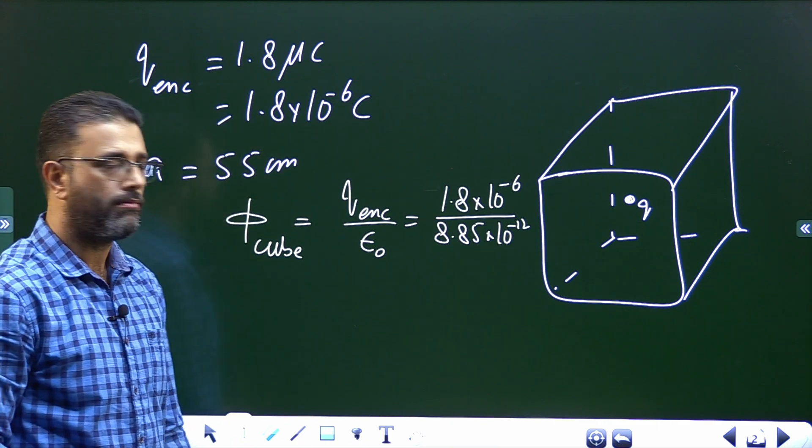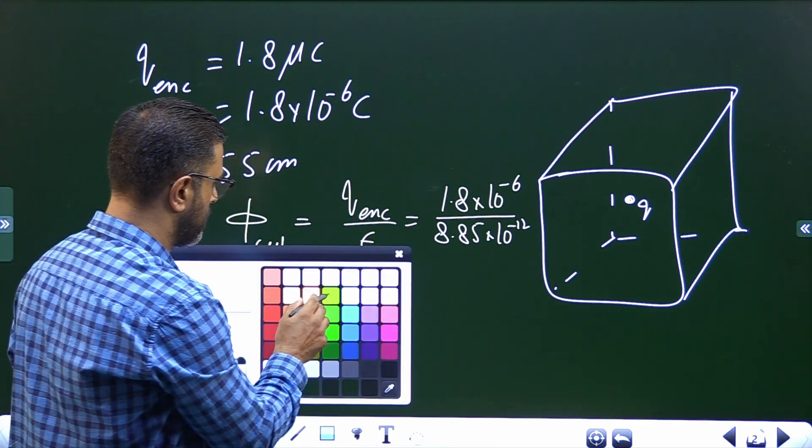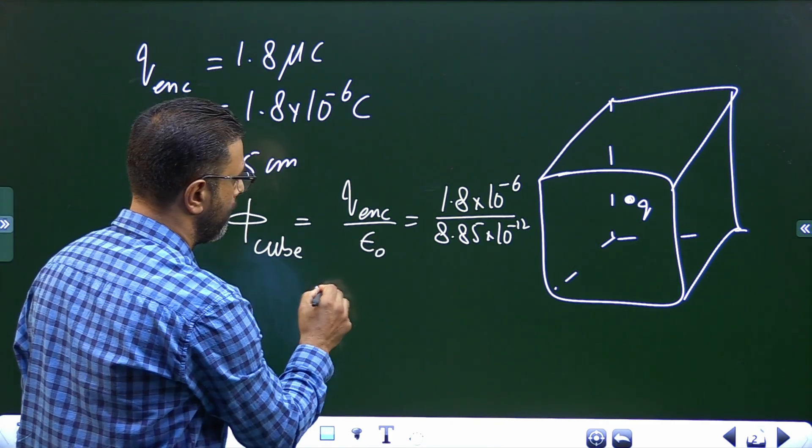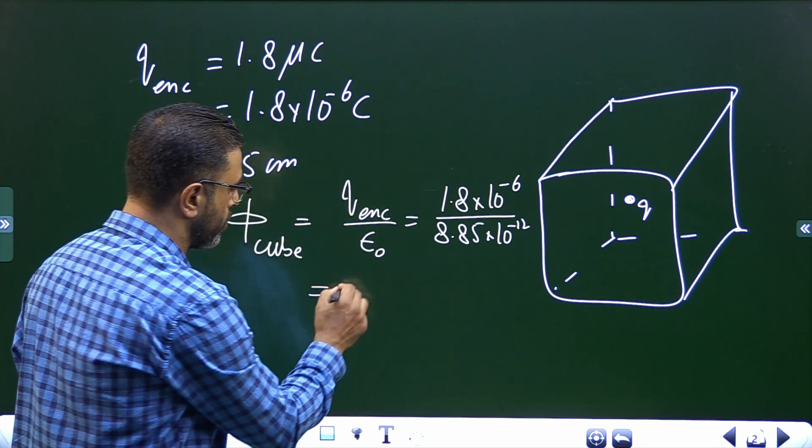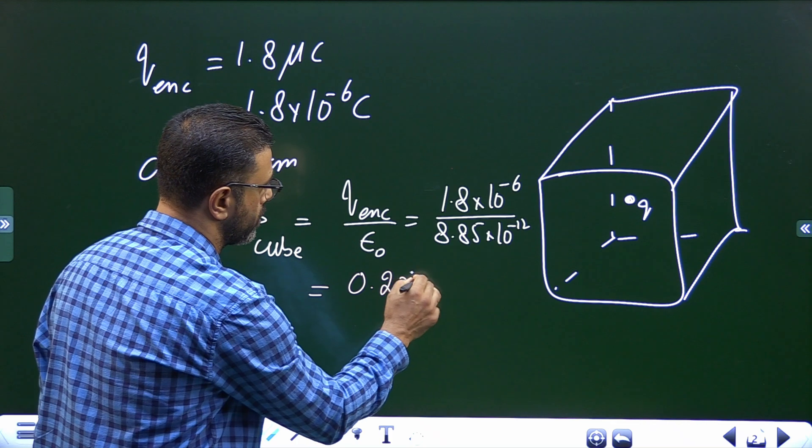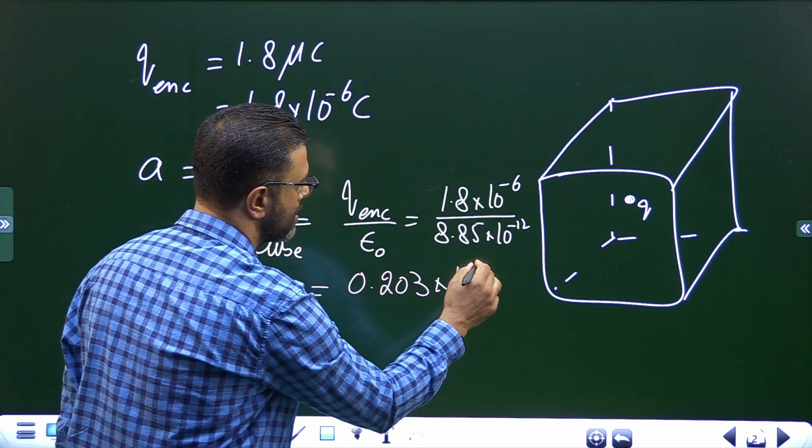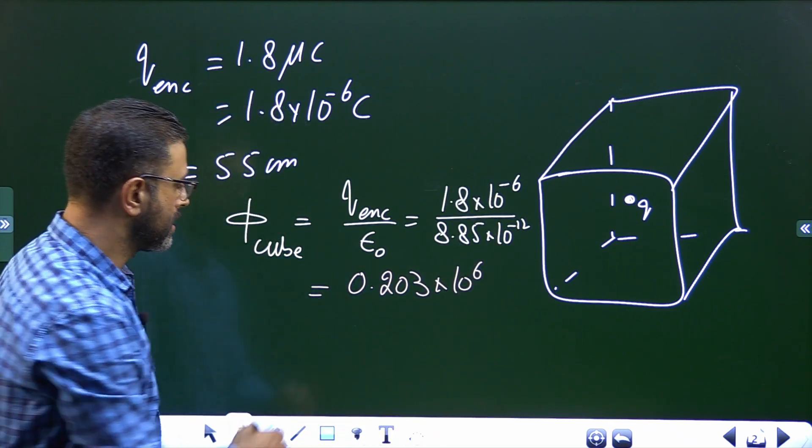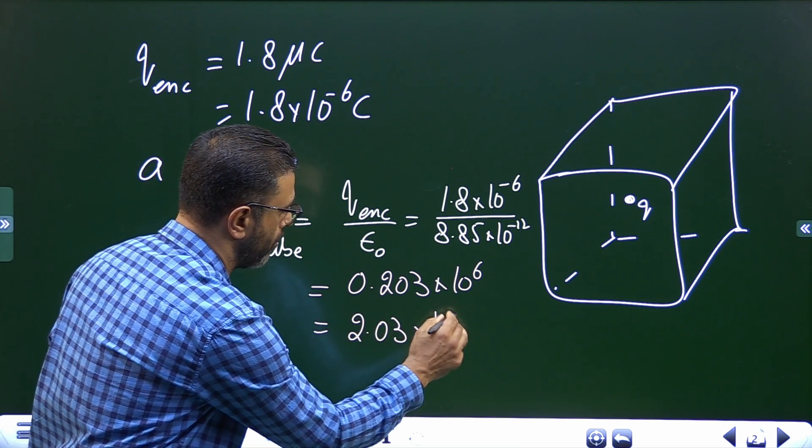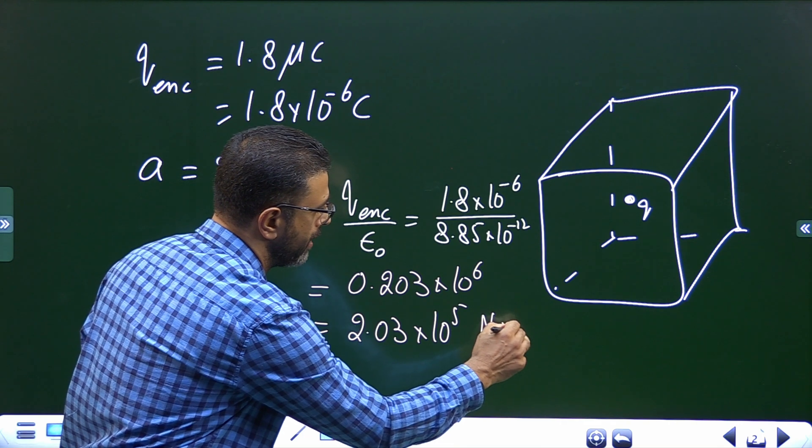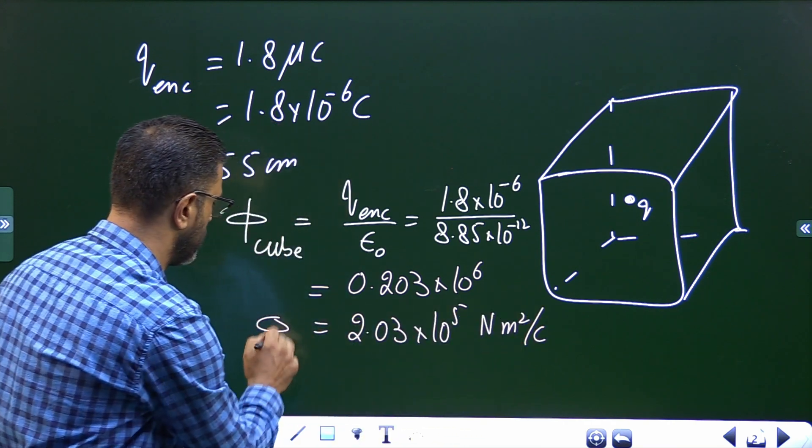So now this thing is, I already worked it out, 0.203 into 10 to the power 6, which is 2.03 into 10 to the power 5 Newton meter square per coulomb. So this is flux through the cube.